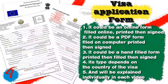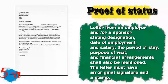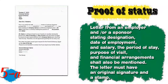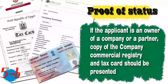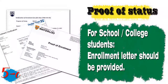Document number four is the visa application form - it could be an online form filled online then printed and signed, a PDF form filled on computer then printed and signed, or a hand-filled form then signed. Its type depends on the country of the visa and will be explained individually in each video. Document number five is proof of status. If you are an employee, you will need a letter from an employer, HR office, or sponsor stating your designation, date of employment, salary, period of stay, purpose of visit, and financial arrangements. The letter must have an original signature and stamp.